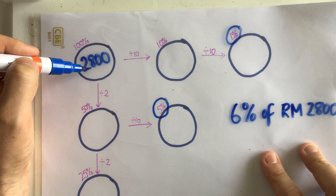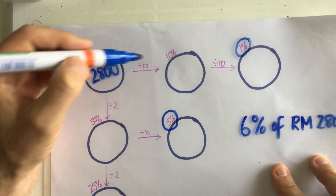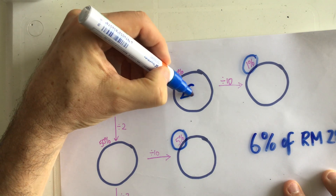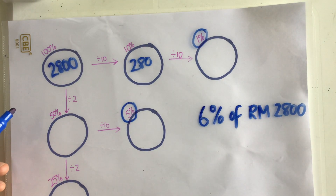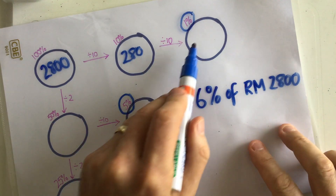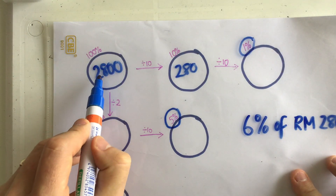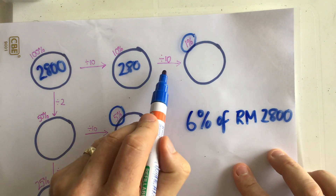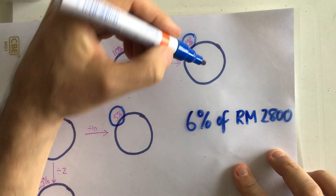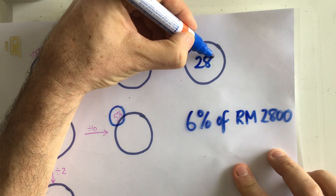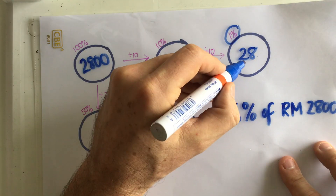2,800 divided by 10 is 280. And 280 is 10% of 2,800. To find 1%, I need to divide this number by 10 as well. So 1% of 2,800 is 28.